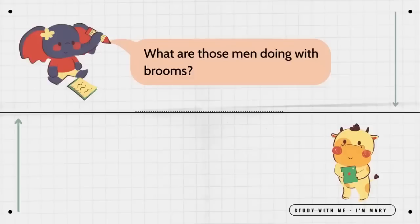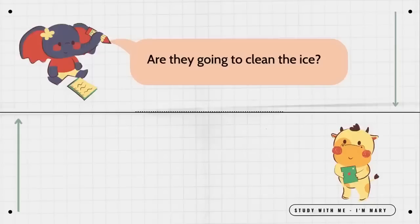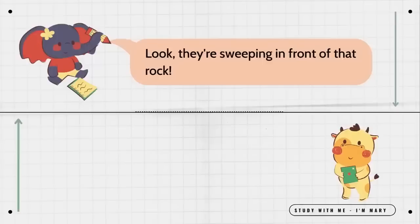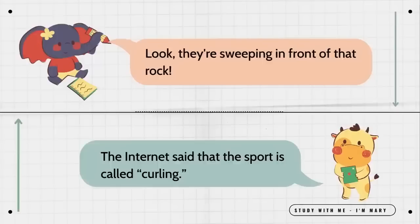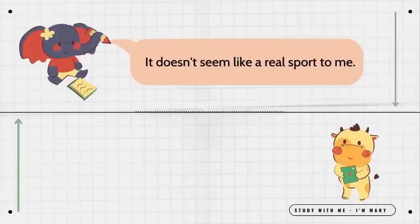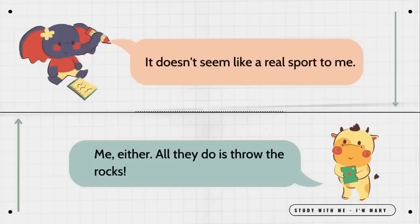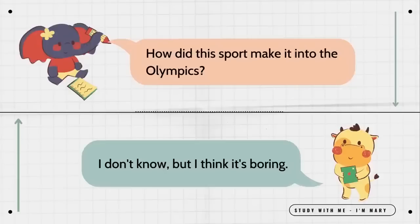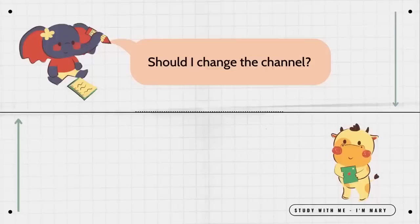What are those men doing with brooms? I think those are special brushes. Are they going to clean the ice? It looks like this is some kind of sport event. Look, they're sweeping in front of that rock. The internet said that the sport is called curling. It doesn't seem like a real sport to me. Me either. All they do is throw the rocks. How did this sport make it into the Olympics? I don't know, but I think it's boring. Should I change the channel? I wouldn't mind if you did.